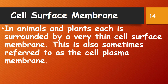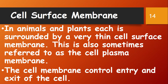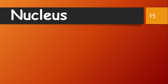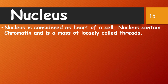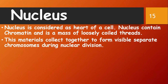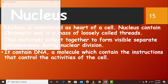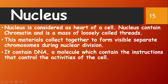Each cell is surrounded by a very thin cell surface membrane, also referred to as the plasma membrane, which controls the entry and exit of the cell. The nucleus is considered the heart — sometimes called the brain — of the cell. It contains chromatin, a mass of loosely coiled threads that collect together to form visible separate chromosomes during nuclear division. It contains DNA, a molecule which carries the instructions that control the activities of the cell.